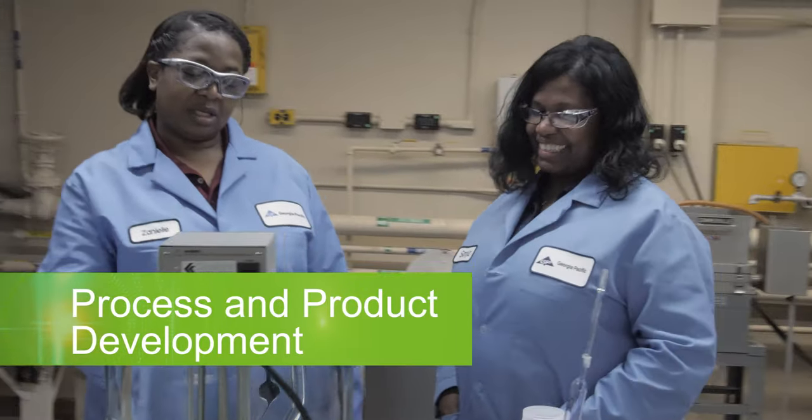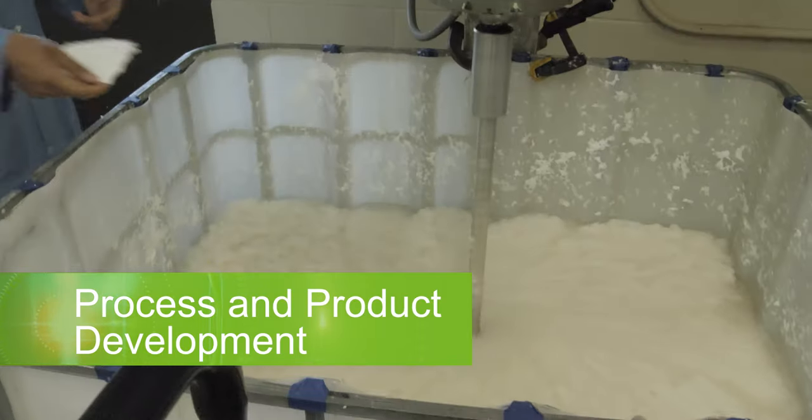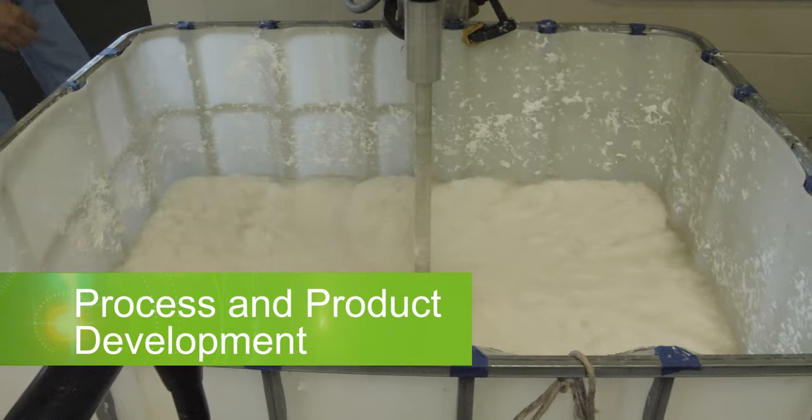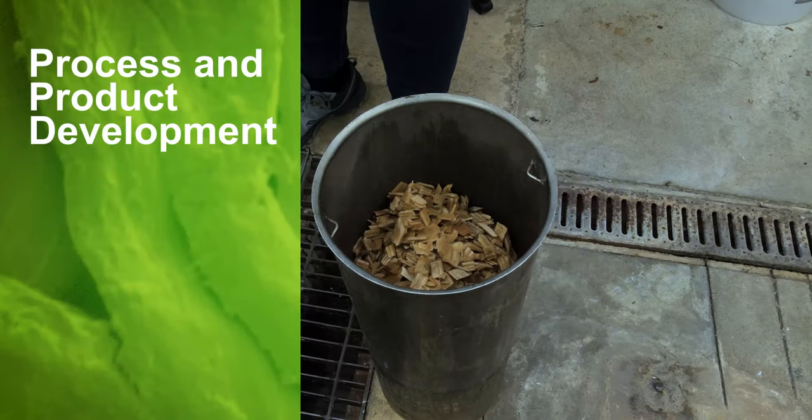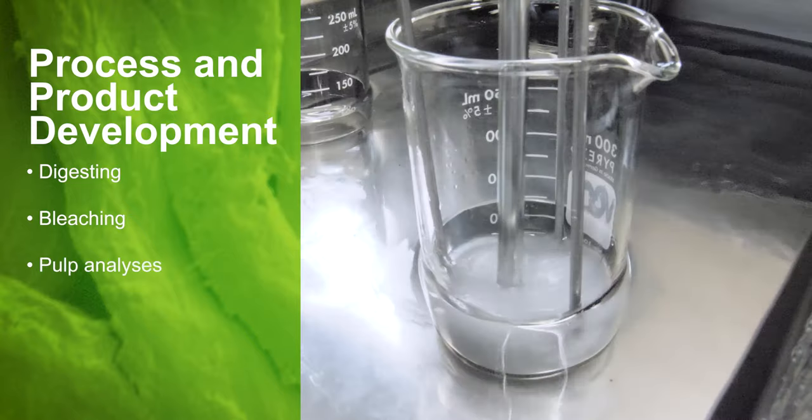In process and product development, we simulate cellulose mill processes to improve existing materials and create new ones. Some of our capabilities include digesting, bleaching, and pulp analyses.